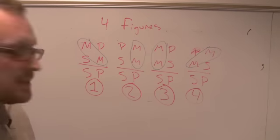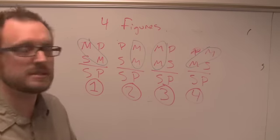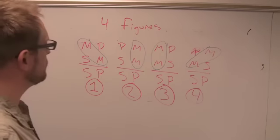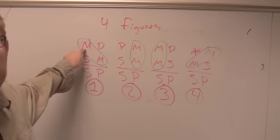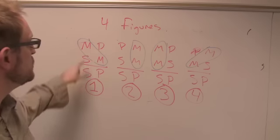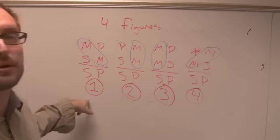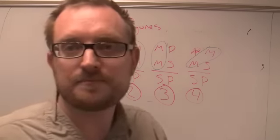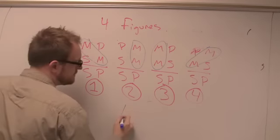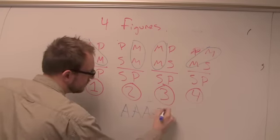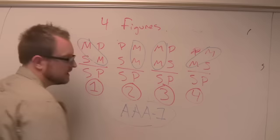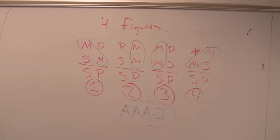Going back to our original proposition, we had a triple A mood, and our middle term was in the figure 1 position, so we have an A-A-A-1. If you look in your book, there's a list of propositions in terms of figure and mood which are unconditionally valid, located on page 247.